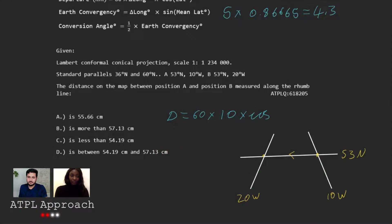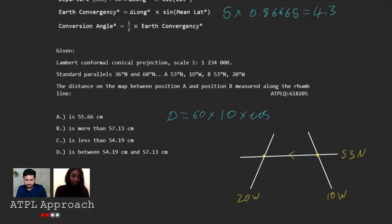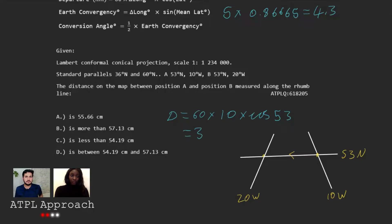And what do we get? I got 361. But 361 — that's no answer here because this number doesn't actually refer to the chart. What is this number referring to? What unit are we looking at here? Nautical miles. Exactly, and there's no chart 361 nautical miles big, is there? No.